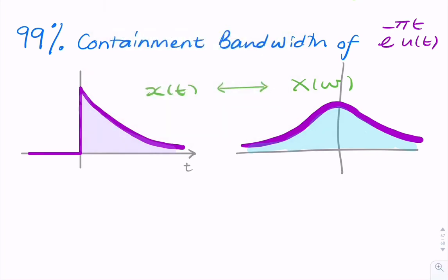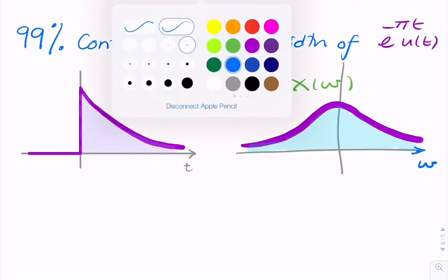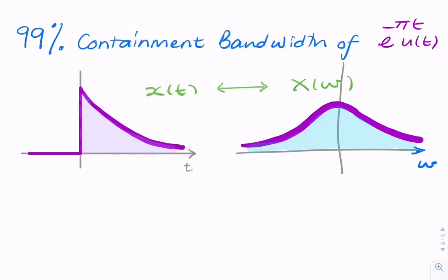So let's just annotate the axes. Here you have frequency omega. And what we're actually after is this value here. We're looking for some value omega where the energy of the signal between minus omega and omega is 99% of the energy of the total signal.